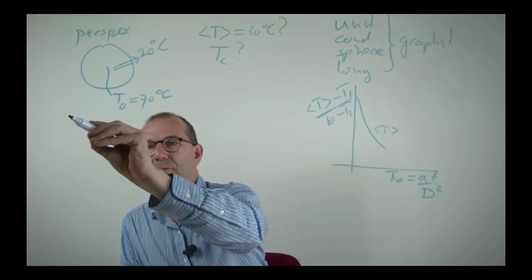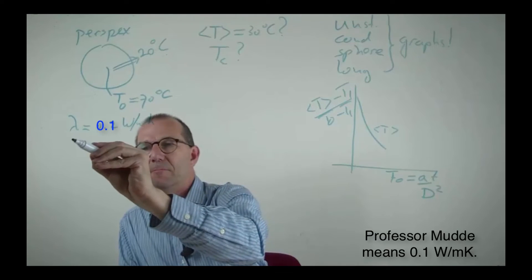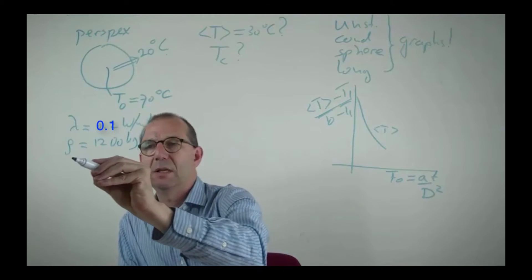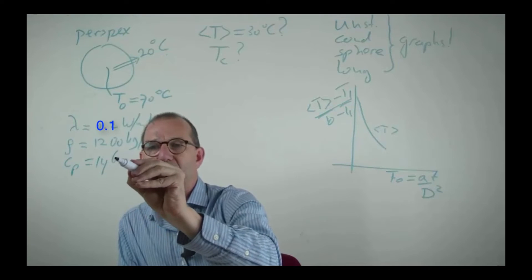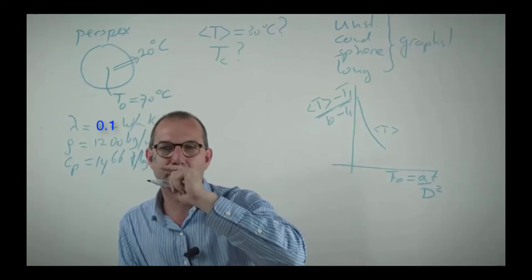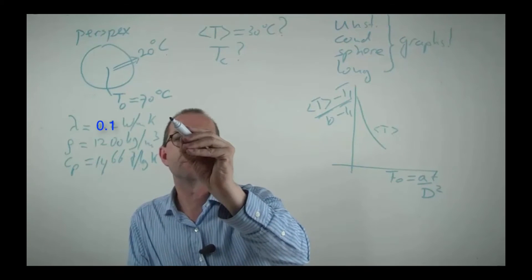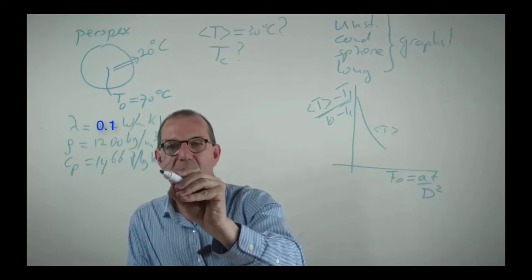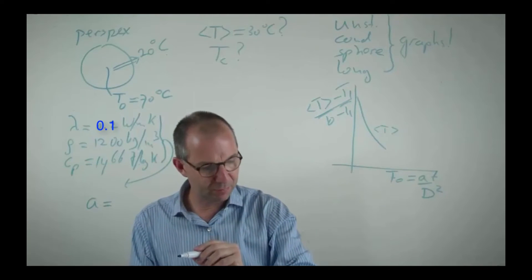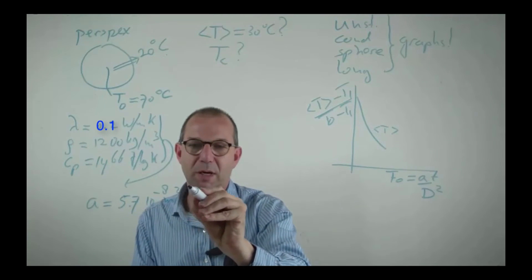Well for perspex lambda is 0.2 watt per meter kelvin, rho is about 1200 kg per cubic meter, cp is I looked up on the internet 1466 Joule per kilogram kelvin. From these we can compute the thermal diffusivity A. A is for perspex 5.7 times 10 to the minus 8 m squared per second.